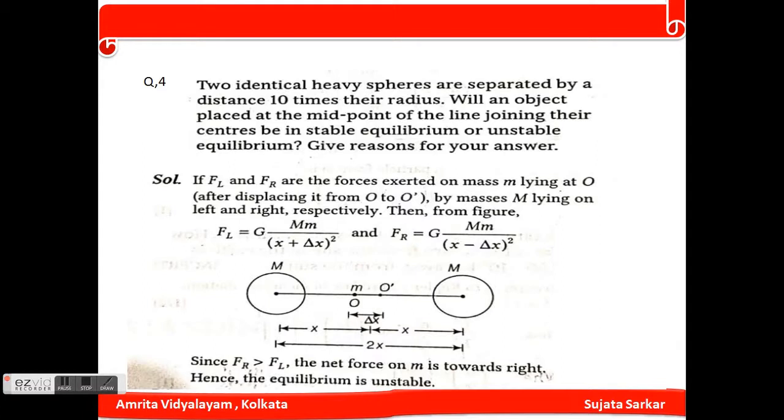Sum number 4: Two identical heavenly bodies are separated by a distance 10 times their radius. Will an object placed at the midpoint of the line joining their centers be in stable equilibrium or unstable equilibrium? F_L and F_R are the two forces exerted on mass m lying at O by masses lying on left and right. F_L equals GMm/(X + ΔX)² and F_R equals GMm/(X - ΔX)². Obviously F_R is greater than F_L because net force on mass m is towards right. Hence the equilibrium is unstable.